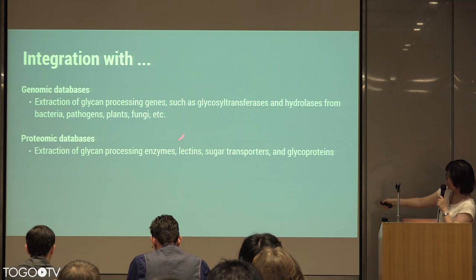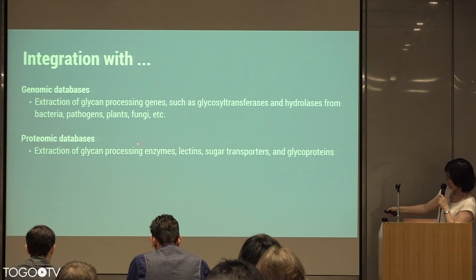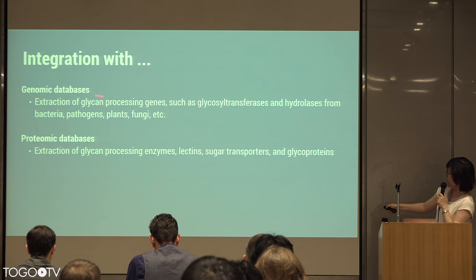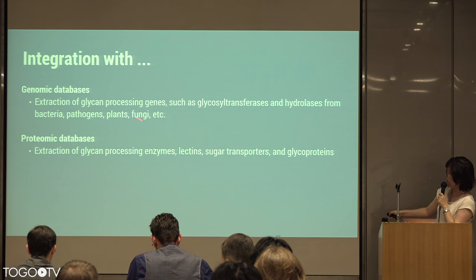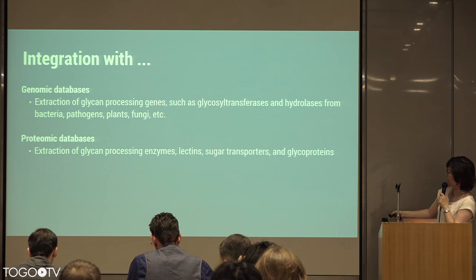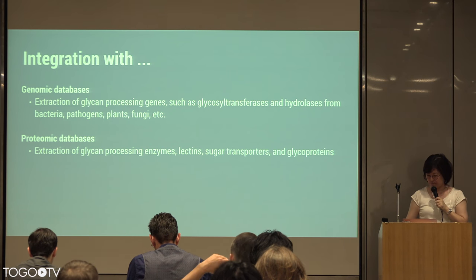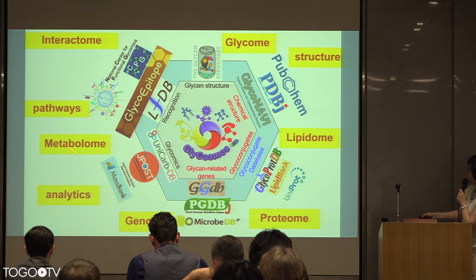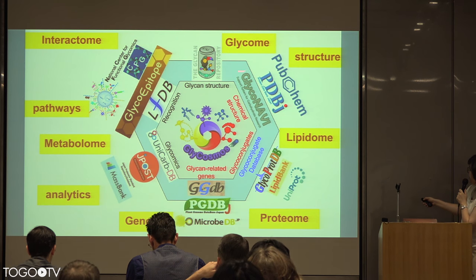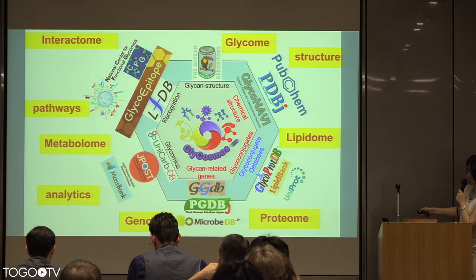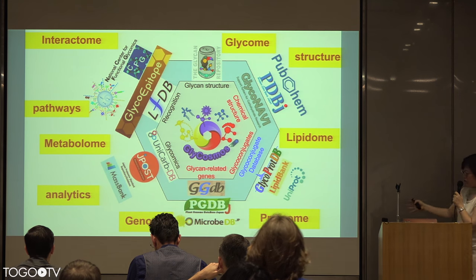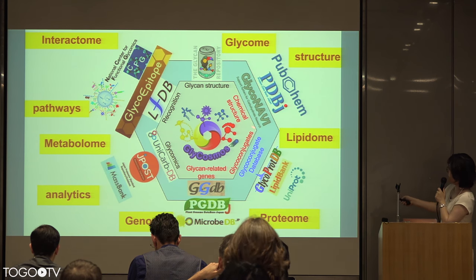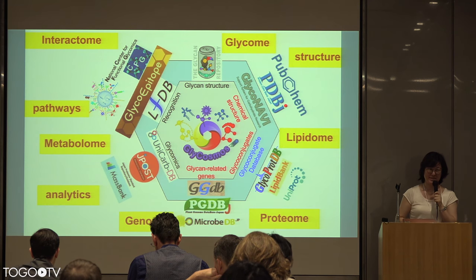The part I'm most interested in doing at this biohackathon is working with genomic databases to extract glycan-processing genes — those transferases and hydrolases — from bacteria, pathogens, plants, fungi, and other genomes we haven't been looking at until now, as well as with proteomic databases. In the end, we hope to have a way to really integrate all these different omics layers that are related to glycans, and to have an overall view of how the cell works through the Glycosmos framework.